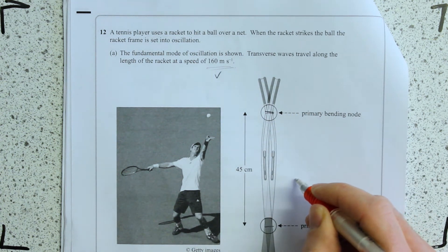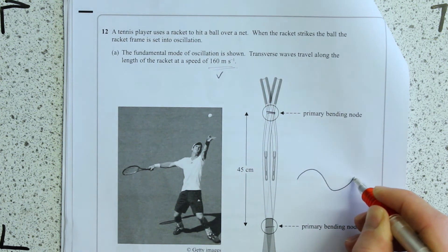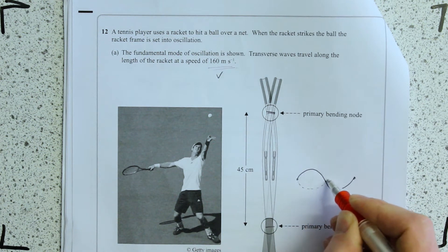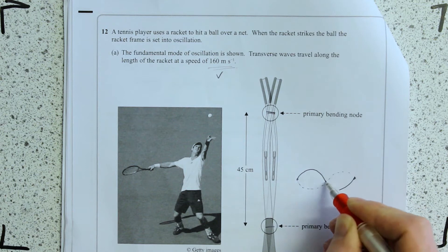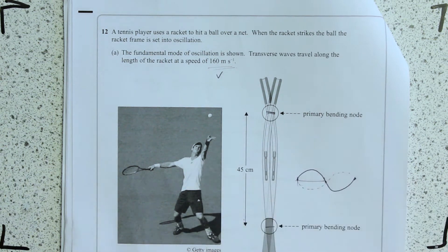You've got a distance between two nodes. And if you can imagine a standing wave, a full wave would be the distance for one full cycle. So this 45 centimetres is only half a wavelength.